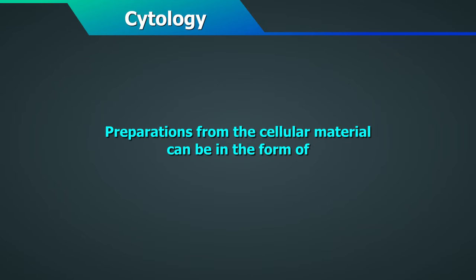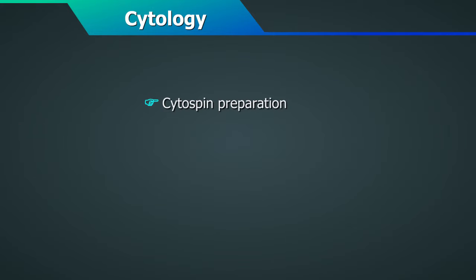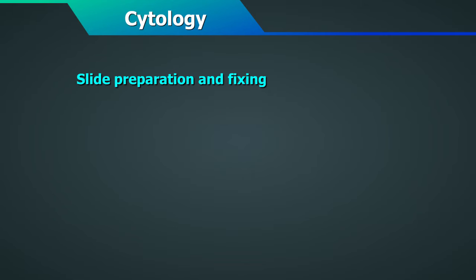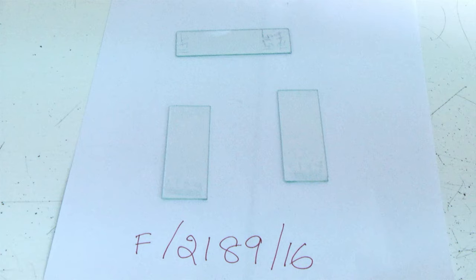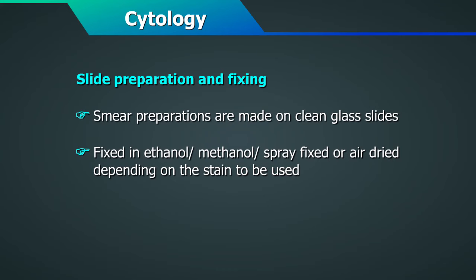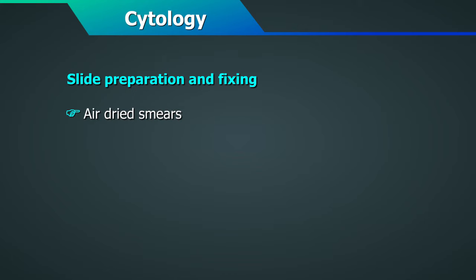Preparations from the cellular material can be in the form of: direct smears on slides (the commonest and easiest), cytospin preparation, membrane filter preparation, liquid-based preparation, and cell blocks. All smear preparations are made on clean glass slides and fixed in ethanol or methanol, or spray-fixed or air-dried depending on the stain to be used. Ethanol fixation is wet fixation, done by immediately immersing the prepared slides into 95% ethanol held in Coplin jars. Air-dried smears are required for some stains like MGG used in FNAC smears.